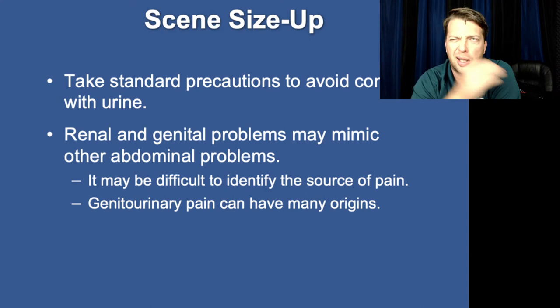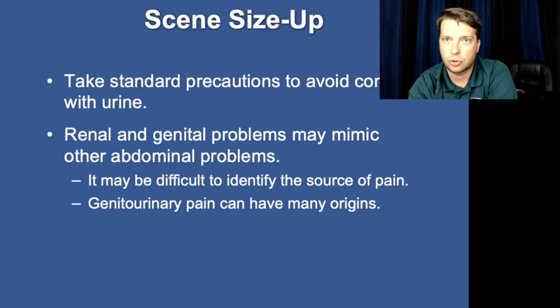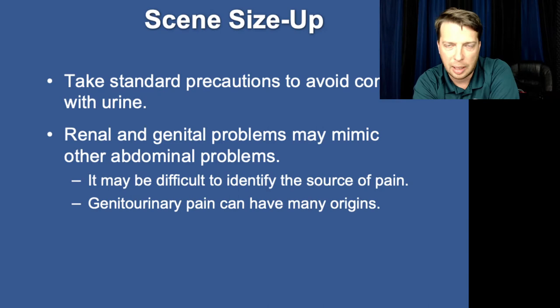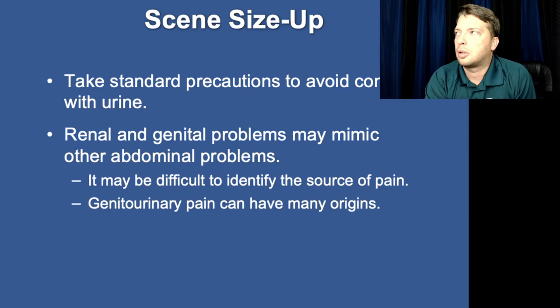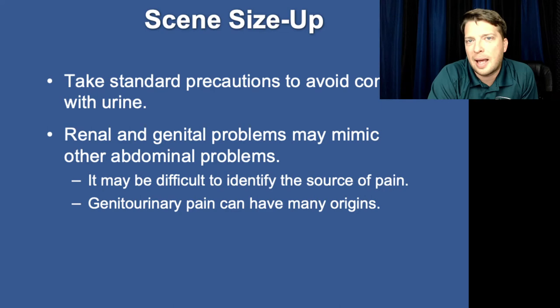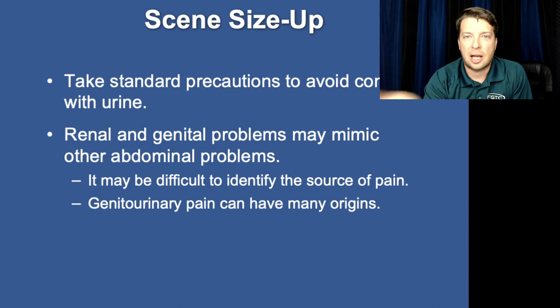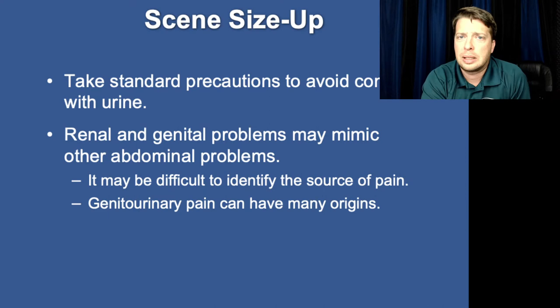Urinary, renal, and genitourinary conditions don't normally come with associated hazards — it's not like trauma. Most of our renal and genitourinary diseases are going to be a slower developing and have come from more benign causes. Another thing to keep in mind is that a lot of your genitourinary and renal complaints are going to be confused with abdominal issues. While the patient might complain of abdominal pain or altered mental status, the actual cause is the renal or urinary system.